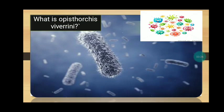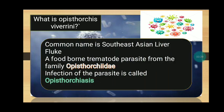So what is Opisthorchis viverrini? Its common name is Southeast Asian liver fluke. It is a food-borne trematode parasite from the family Opisthorchidae that infects the bile duct of humans. People are infected after eating raw or undercooked fish. Infection with the parasite is called Opisthorchiasis.